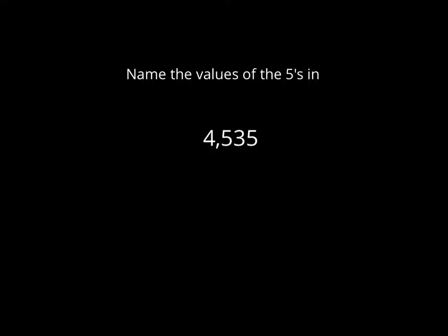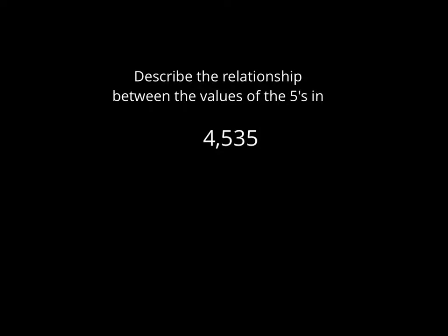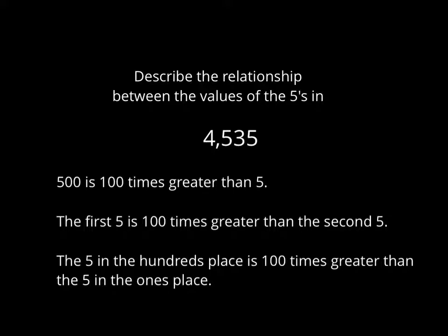You're being asked to name the value of the 5s in 4,535. Write them down or say them. Let's check your answer: this one is 500, this one is 5. What is the relationship between the values of the 5s in 4,535? Start with the smaller place — you go 10 times, then 10 times 10 is 100. So you could say that 500 is 100 times greater than 5, or the first 5 is 100 times greater than the second 5, or the 5 in the 100s place is 100 times greater than the 5 in the 1s place. All of those answers show you understand the relationship between those identical digits.